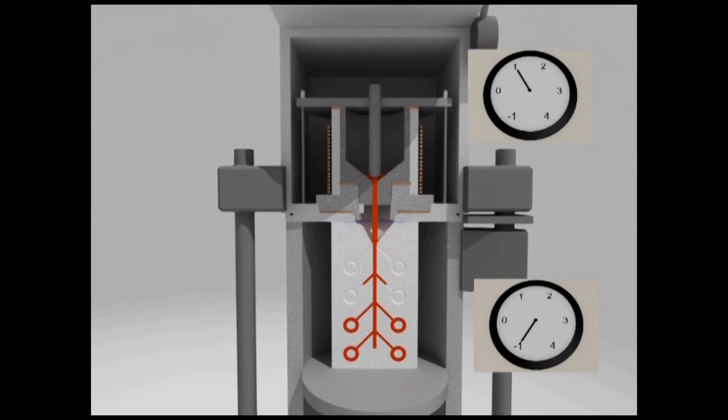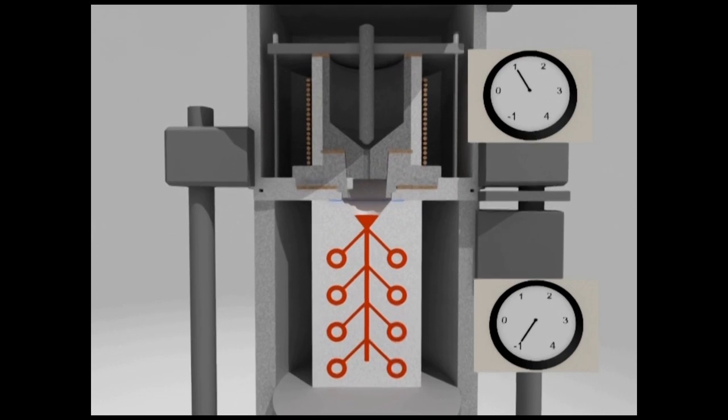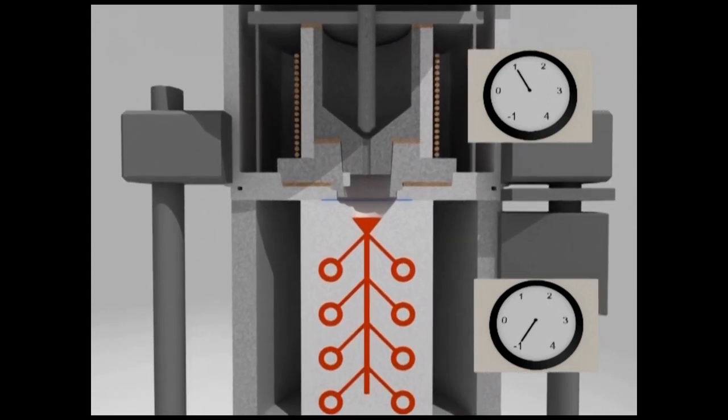When the crucible gasket and sealing are proper, the gas pressure will push out the metal from the crucible by increasing its pouring speed while the vacuum pulls it.